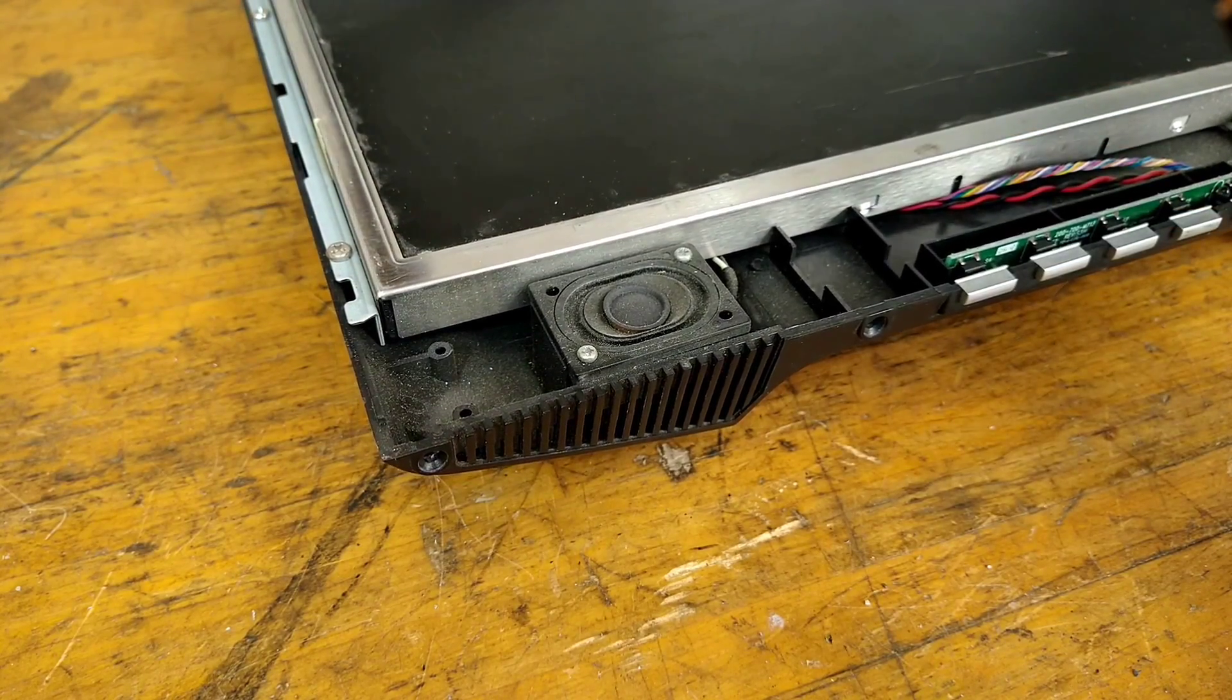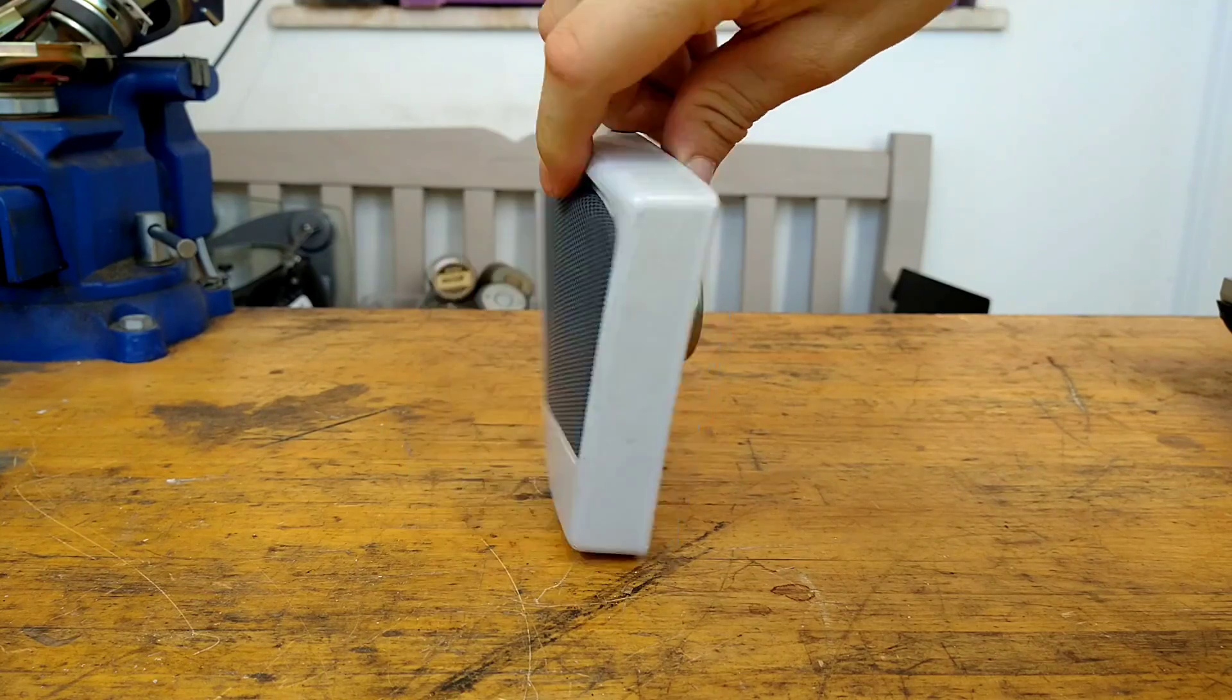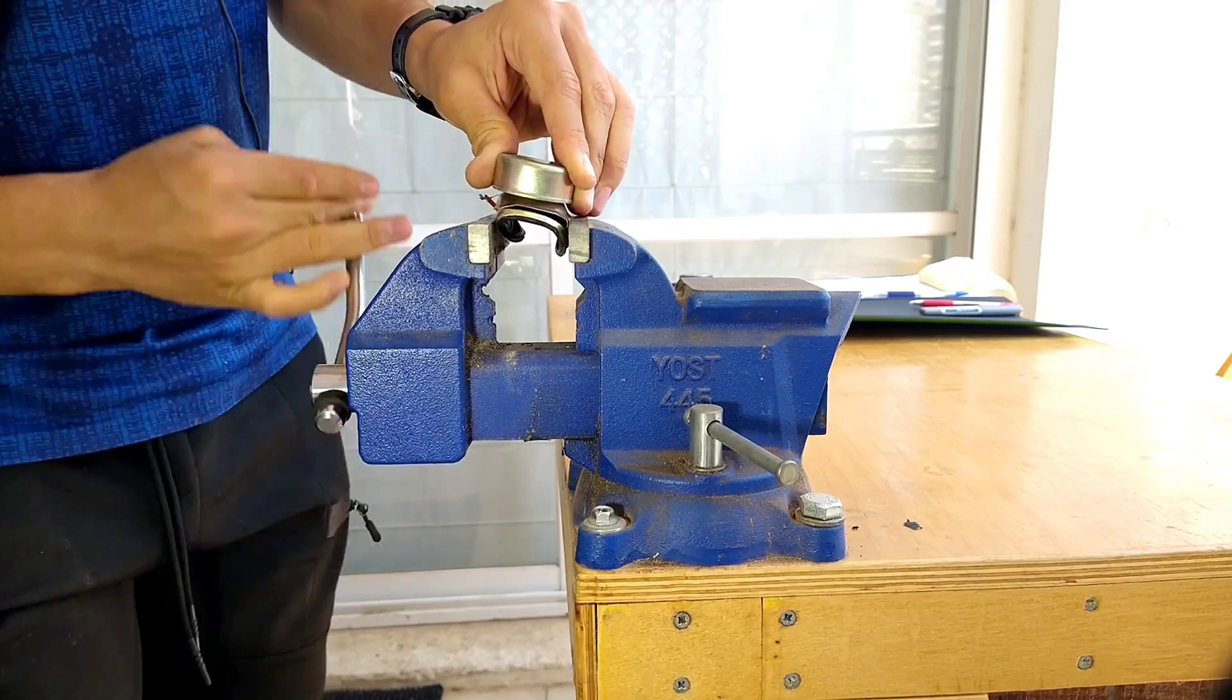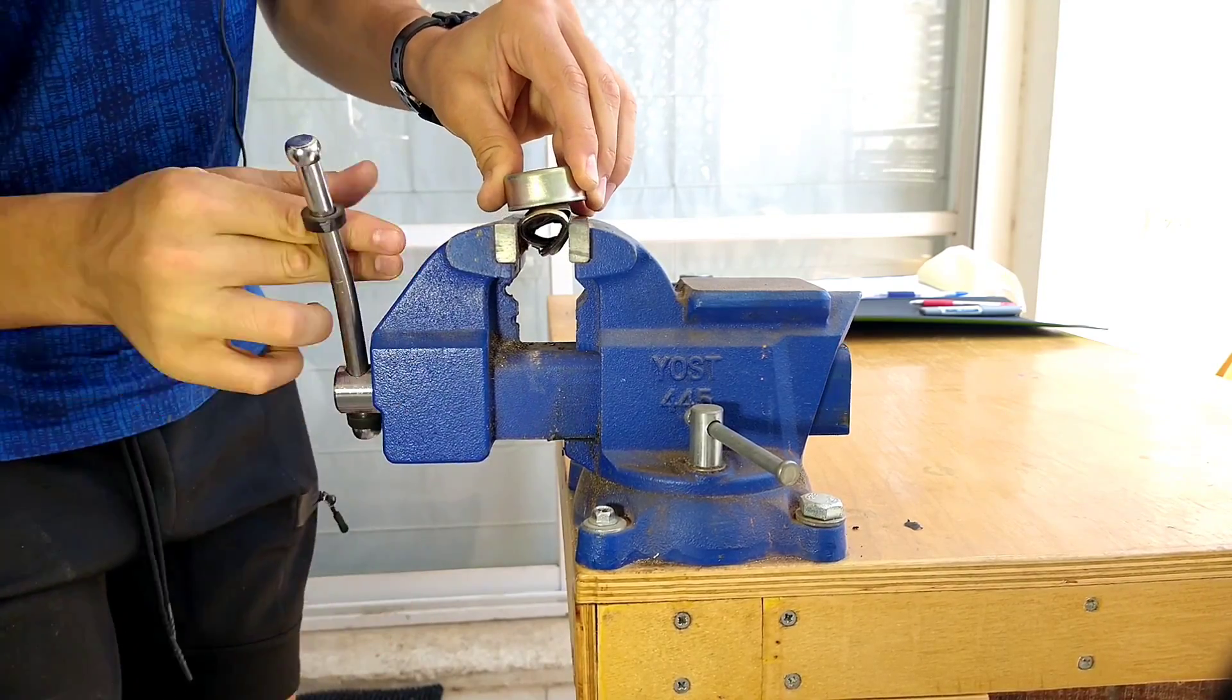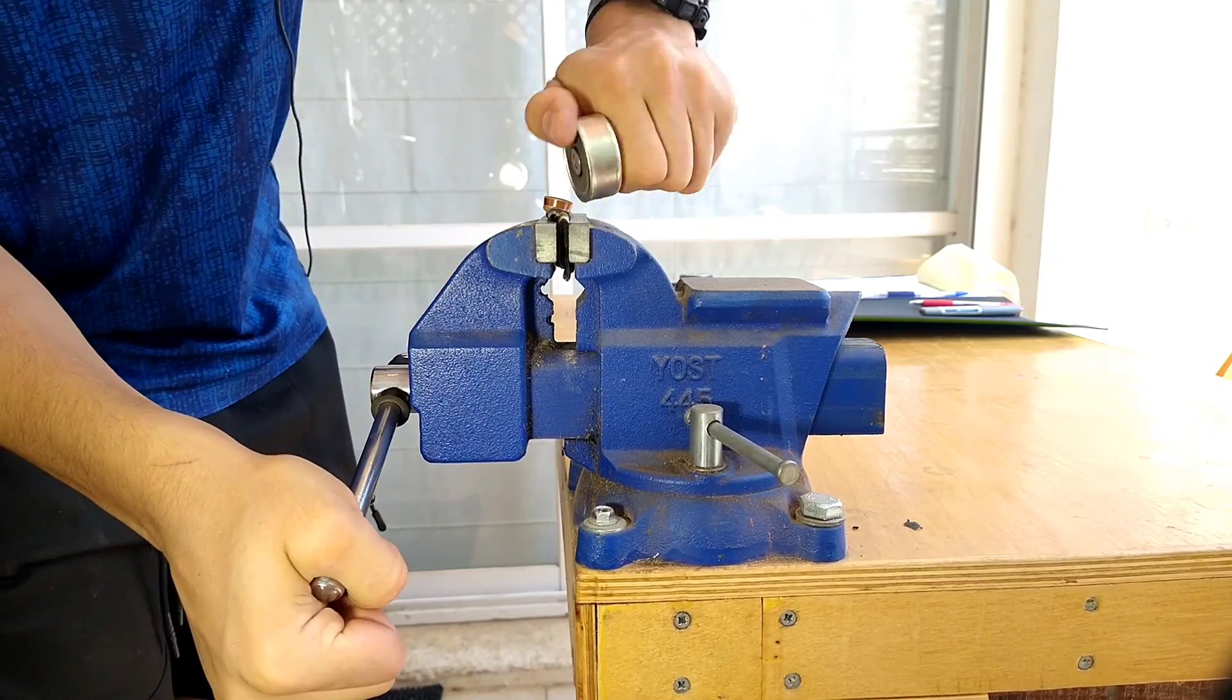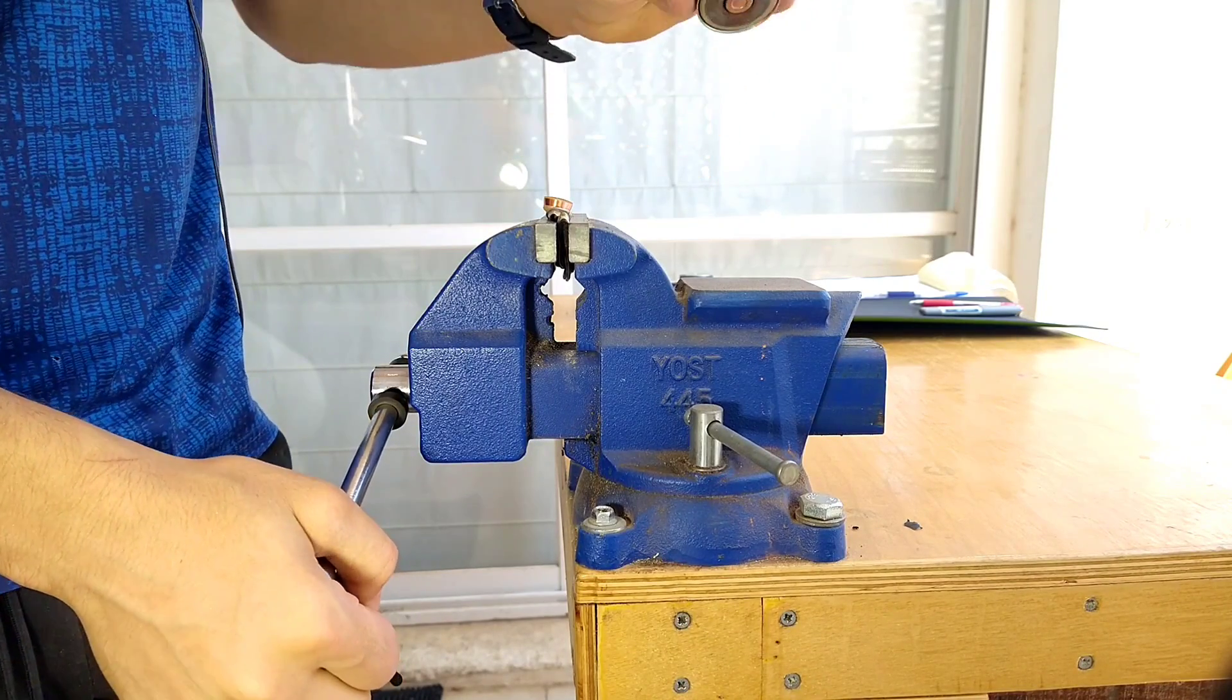Speakers of all sizes from subwoofers to earbuds contain relatively strong round magnets, and I found the fastest way to separate the magnet from the basket, which is the cone shaped part, is by crushing it in a bench vise. The basket simply crumples under pressure and you're left with a magnet on top.